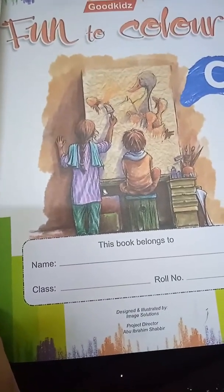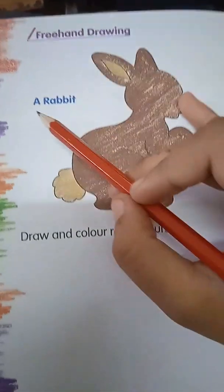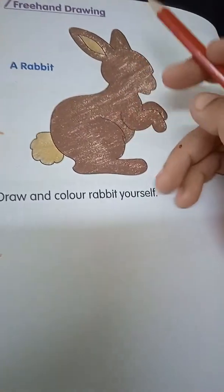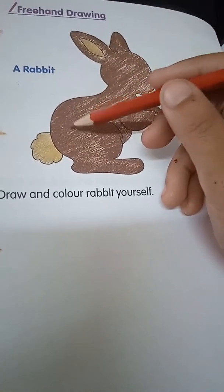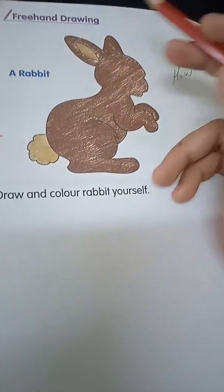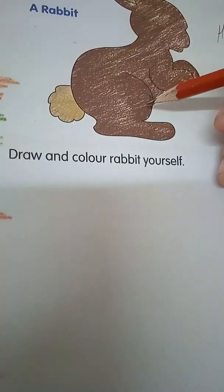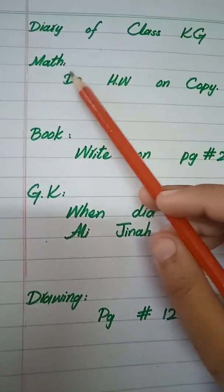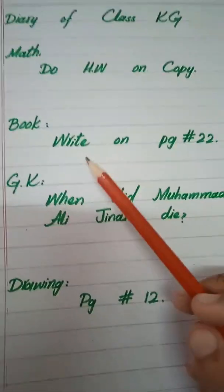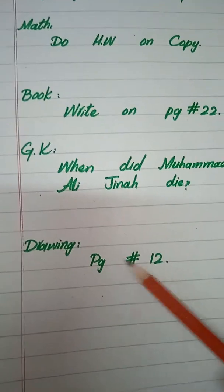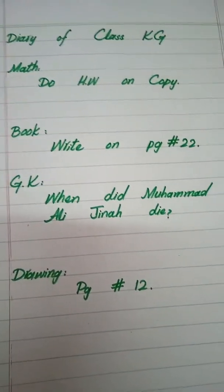Now open this book, page number 12. So students, what do we have today? This is a rabbit. You can color by yourself. It is not necessary that you have to color the rabbit with brown color. You can take any color. The rabbit can be found in white and black colors. Okay? Color the rabbit neatly. Now come to your diary. In your diary, write your homework: Math - copy, book write on page number 22. General knowledge - when did Muhammad Ali Jinnah die? Drawing - page number 12. Do it with care. Inshallah, we will meet tomorrow. Allah Hafiz.